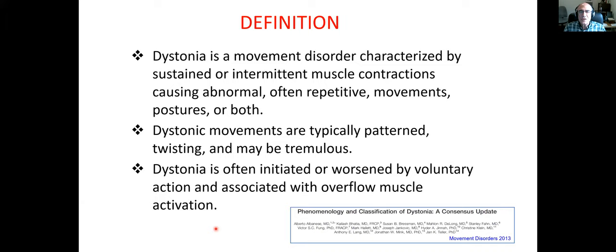Dystonia is a movement disorder characterized by sustained or intermittent muscle contractions causing abnormal, often repetitive movements, postures, or both. Dystonic movements are typically patterned, twisting, and may be tremulous. Dystonia is often initiated or worsened by voluntary action and associated with overflow muscle activation. This is the relatively new definition made from a panel from the Movement Disorder Society and the Dystonia Medical Research Foundation organized by Alberto Albanese in 2013.